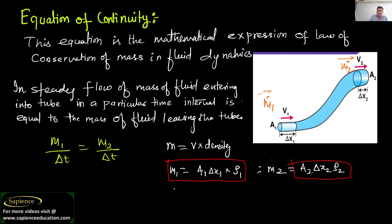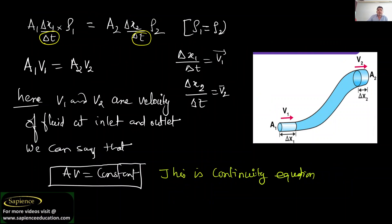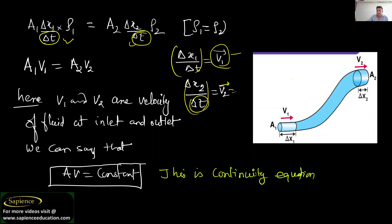We set them equal because we assumed mass entering equals mass coming out. So A1 into delta x1 into rho1 equals A2 into delta x2 into rho2. Dividing by delta t, delta x1 over delta t equals velocity v1, and at the same time delta x2 over delta t equals velocity v2. V1 is velocity at inlet and v2 is velocity at outlet.